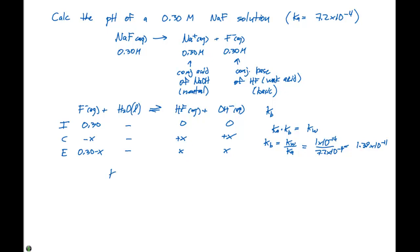We can now set up our Kb expression, which is equal to the concentration of X times the concentration of X divided by 0.30 - X, and that's going to equal 1.39 times 10 to the -11.